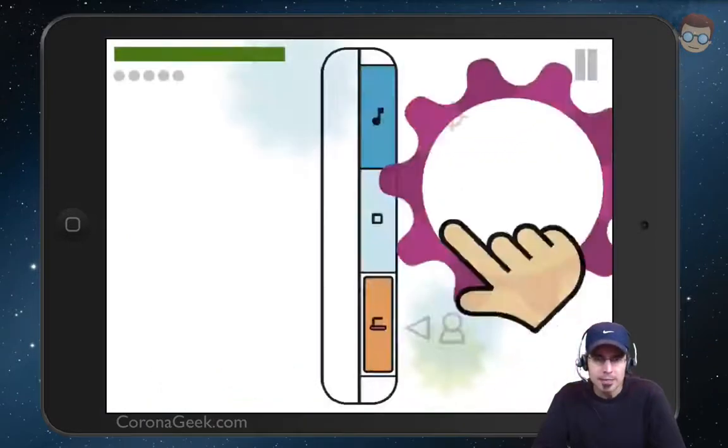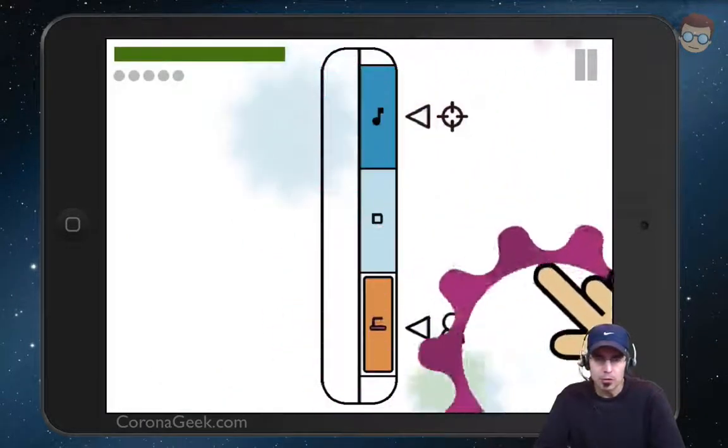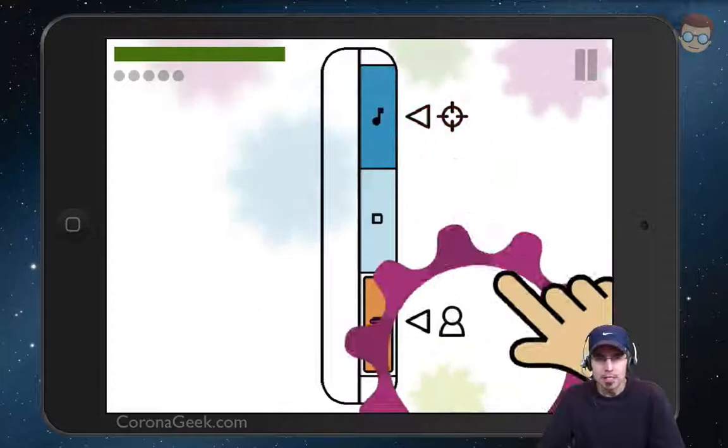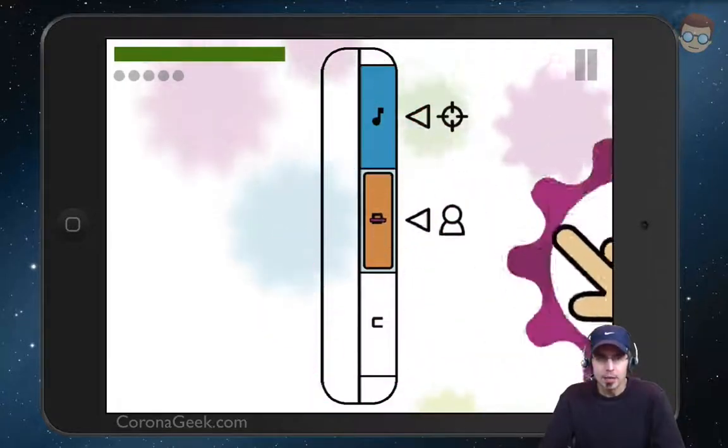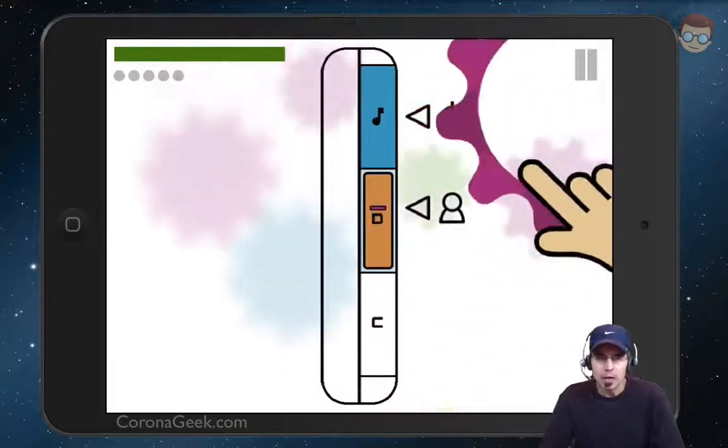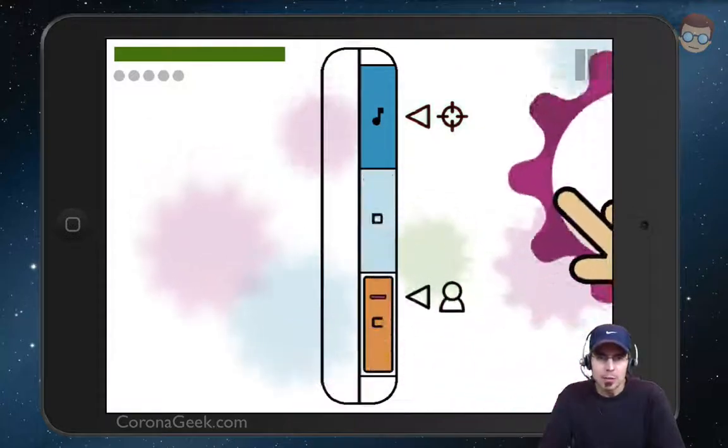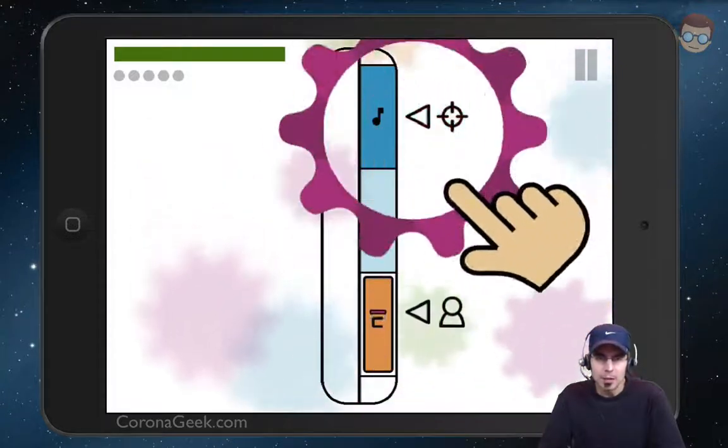In level one, it starts out with a tutorial that shows you how you play. Basically, you need to keep your peg over your note for a certain amount of time so that you can accomplish that note and move on to the next one.